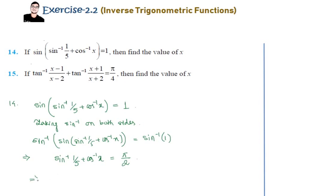Now we have the variable cos⁻¹x on the left and sin⁻¹(1/5) on the right. Let's bring sin⁻¹(1/5) to the right-hand side, so we are left with: cos⁻¹x = π/2 − sin⁻¹(1/5).